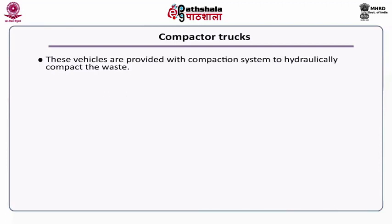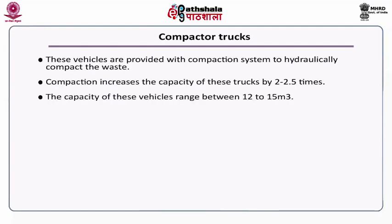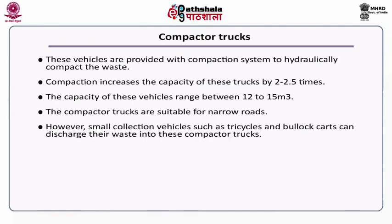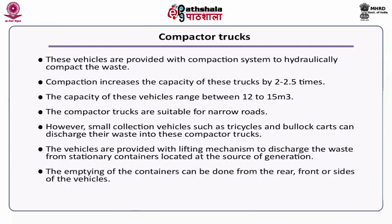The third type of collection vehicle is the compacted truck. These vehicles are provided with a compaction system to hydraulically compact the waste. Compaction generally increases the capacity of these trucks by 2 to 2.5 times. The capacity ranges between 12 to 15 meter cube and they are suitable for narrow roads. Small collection vehicles such as tricycles and bullock carts can discharge their waste into these compacted trucks. The vehicles are provided with a lifting mechanism to discharge waste from stationary containers, and the emptying of containers is generally done from the rear side, front side, or at the sides of the vehicles.